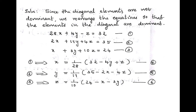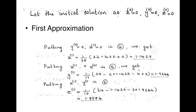After interchanging equations 2 and 3, we write expressions for x, y, and z. From equation 1: x = (1/28)(32 − 4y + z). Then write an expression for y from equation 2 and an expression for z from equation 3. These are the formulas for the unknowns x, y, and z. Since no initial approximation is given, we take x⁰, y⁰, z⁰ as 0, 0, 0.